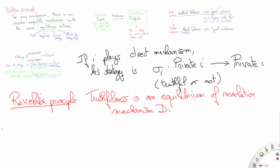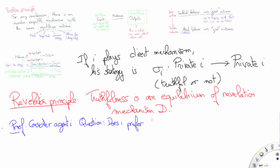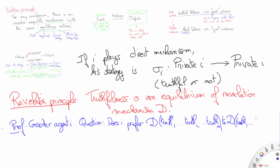Let us prove this in the case of the Nash equilibrium. Assume that all agents but agent i behave truthfully for the revelation mechanism. Agent i then wonders if he should behave truthfully as well. To answer this, he needs to consider an alternative to truthfulness, which we'll call T'_i. And he needs to ask himself whether he prefers the revelation mechanism applied to truthful strategies, or the direct mechanism applied to the truthful strategies played by other agents, except for the i-th coordinate — the one controlled by agent i — where he plays T'_i instead of truthfulness.